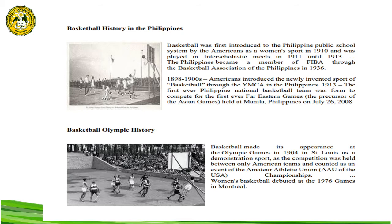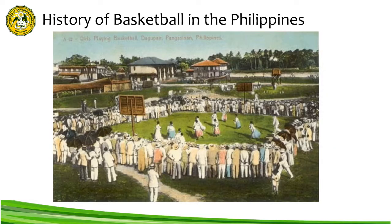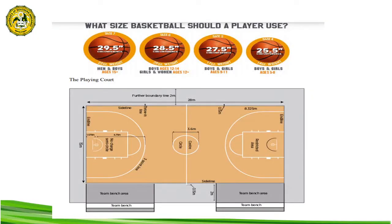However, women's basketball faced opposition from conservative groups, particularly the Catholic Church, who viewed the bloomers worn by women basketball players as inappropriate. By the time skirts were allowed to be worn over bloomers as a compromise, women's basketball was already in decline and was only played in provincial and local interscholastic meets.